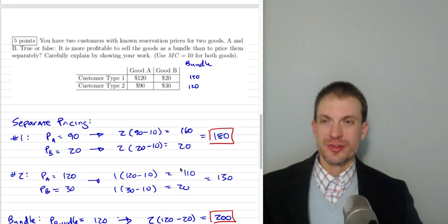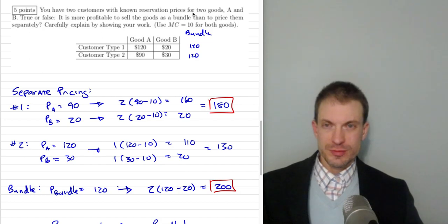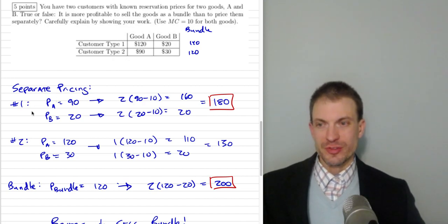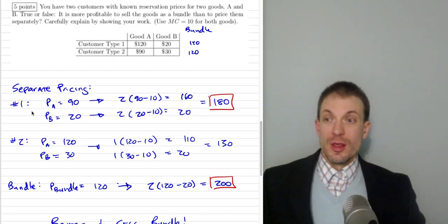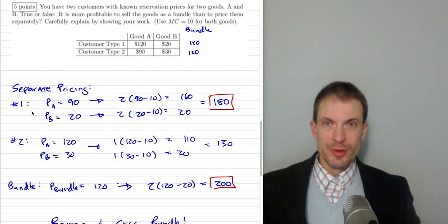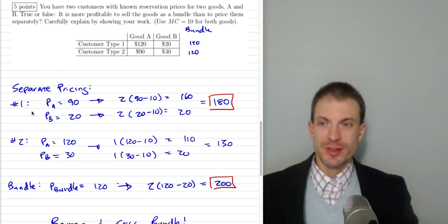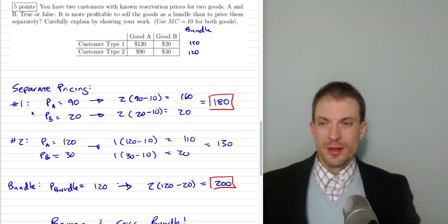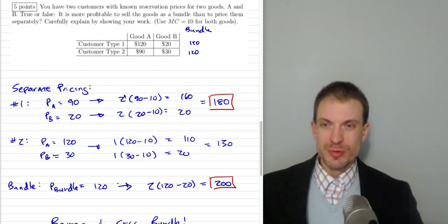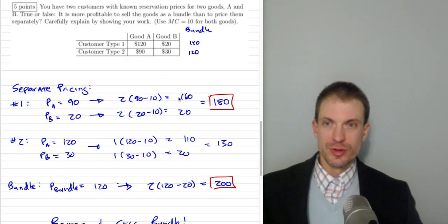Let's answer the first case. We're going to determine profits if we price separately. One option: set prices equal to the lowest of the two willingness to pay, which allows selling to both consumers. Set the price of good A equal to $90 — consumer of type 1 would have paid $120, but at $120 we can't sell to both. At $90, both consumers buy. With marginal cost of 10, profits from good A are (90 − 10) × 2 = $160.